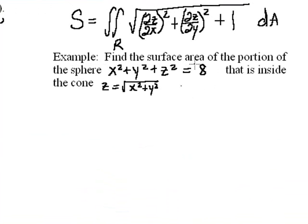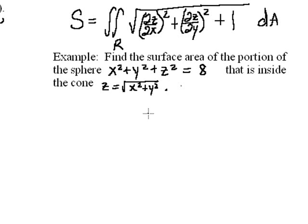For example: find the surface area of the portion of the sphere x² + y² + z² = 8 that is inside the cone z = √(x² + y²). One reason I wanted to work this problem is that we can apply this new formula. Another reason is that, unlike the previous example, we're not given the region R directly — we have to figure it out. Let's start by graphing a rough sketch.